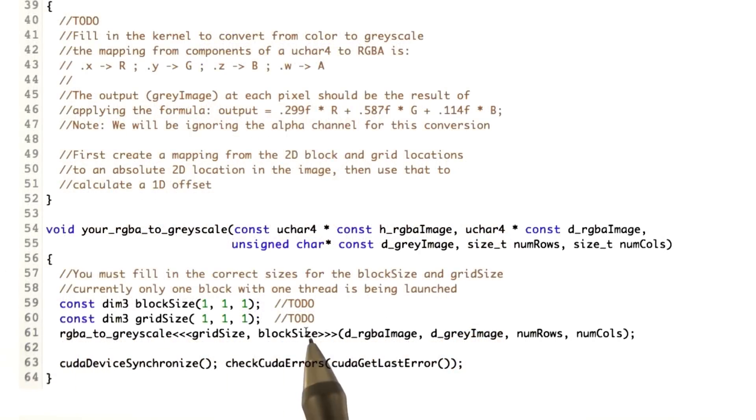In part 2, the kernel is already filled in for you but with incorrect dimensions and its body is empty. Your job for part 2 is to fill in the body of the kernel and to correct the dimensions of block size and grid size. We have included reference code that performs the same calculation in serial on the CPU for your reference.